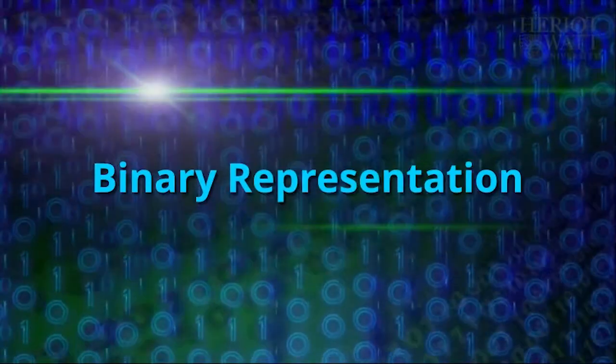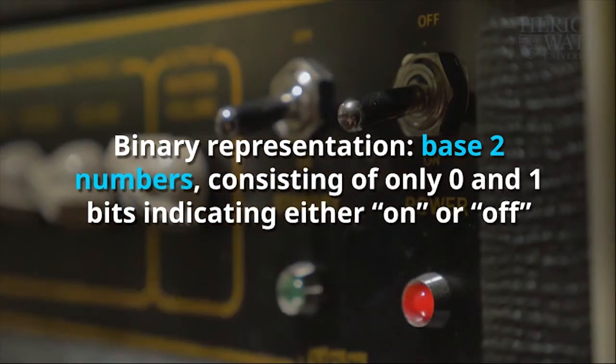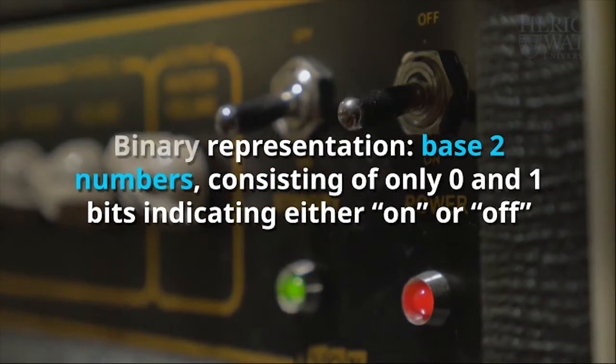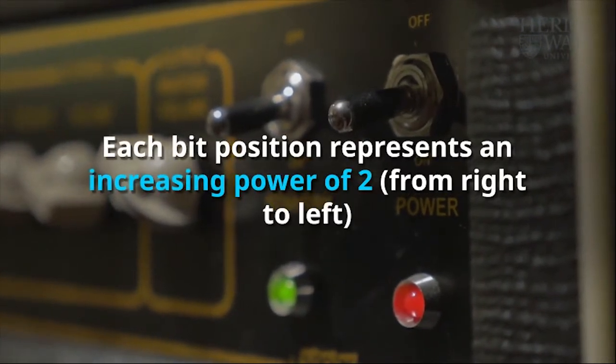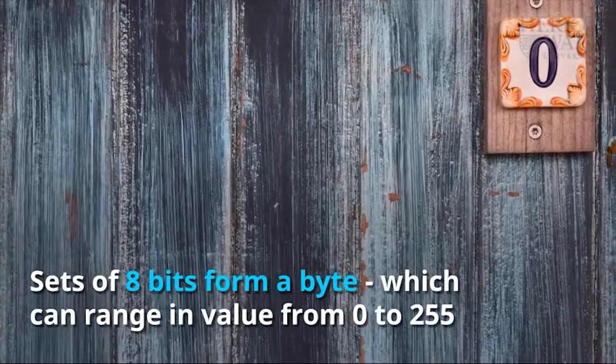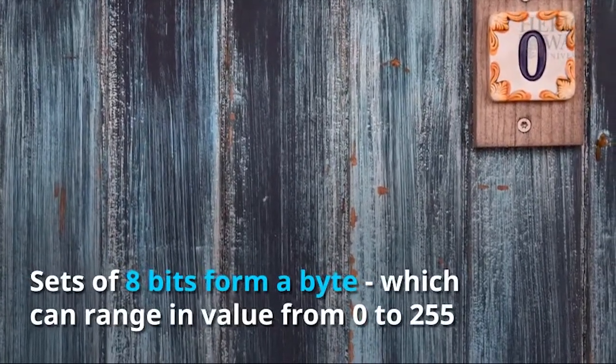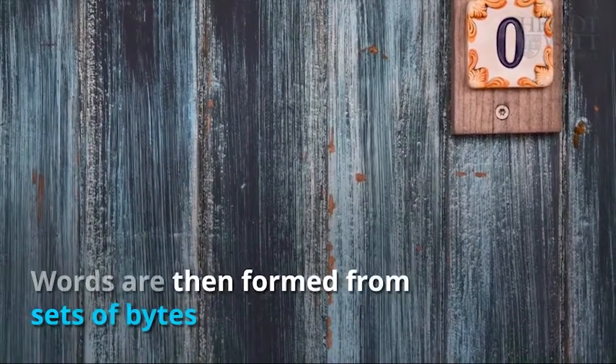Binary representation based two numbers consisting of only 0 and 1 bits, indicating either on or off. Each bit position represents an increasing power of 2, from right to left. N bits can represent values from 0 to 2 to the power of N minus 1. Sets of 8 bits form a byte, which can range in value from 0 to 255. Words are then formed from sets of bytes.